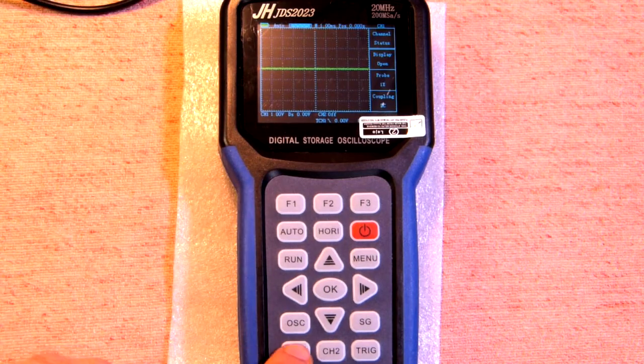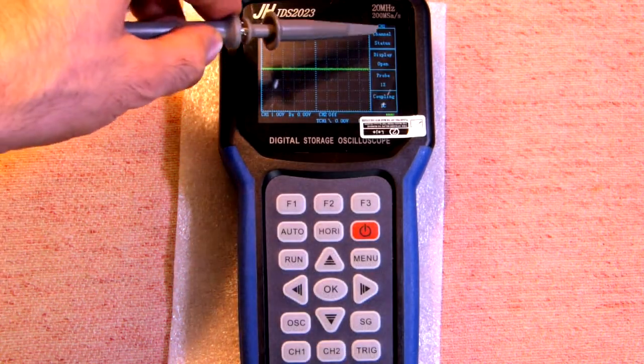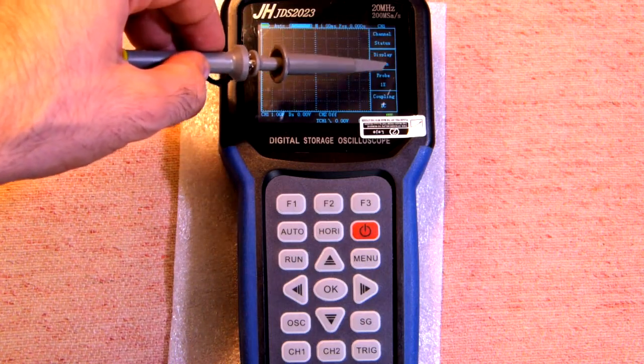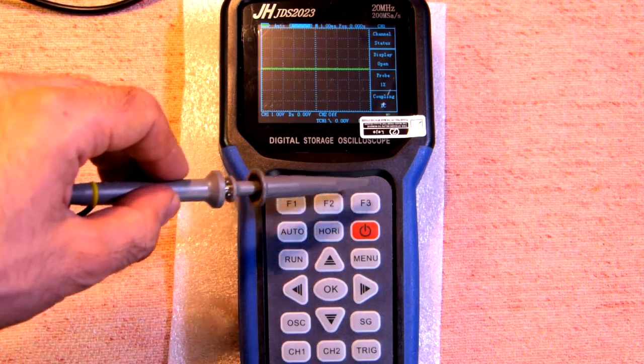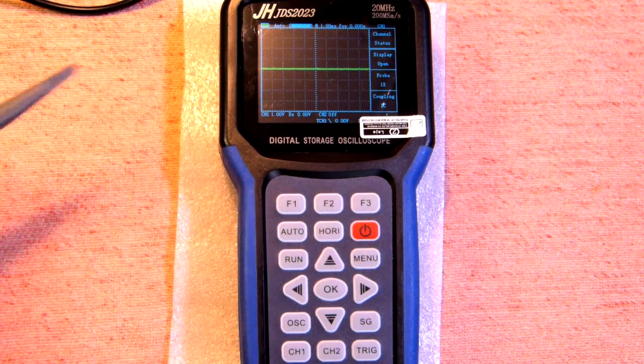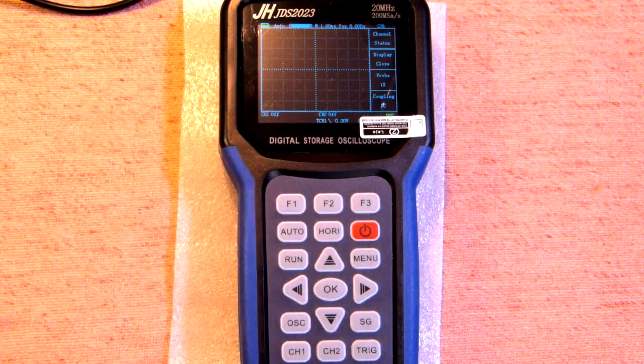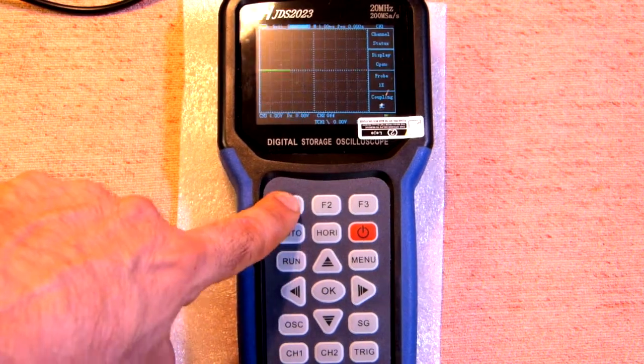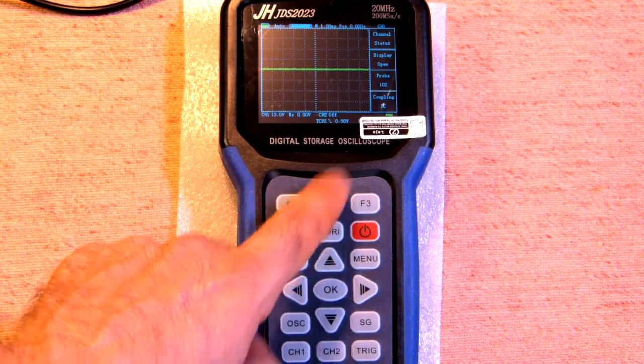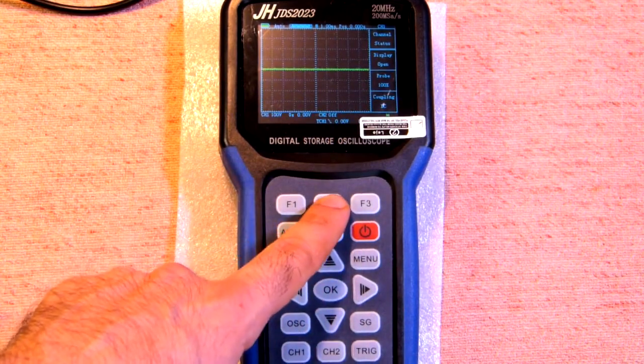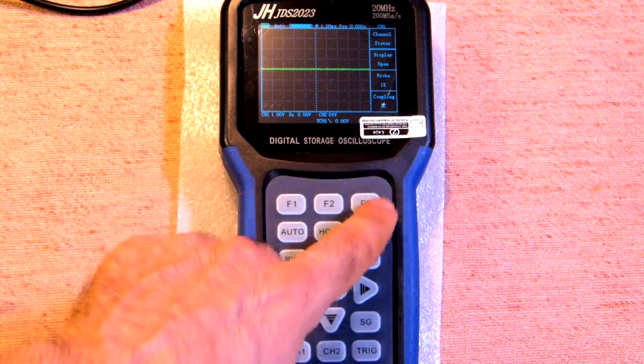In case of channel 1 we press channel 1, in case of channel 2 we press channel 2. Here we have channel status and all the functions can be changed with the help of these buttons f1, f2 and f3. So display open means that the channel is on. In case of f1 now we have display close. It means that the channel is off. Once again it's on. The probe is 1x, in case we press f2 it's 10x and 100x, and here the measurement will change. And coupling you can change DC and AC.